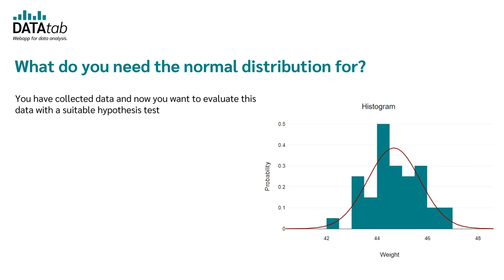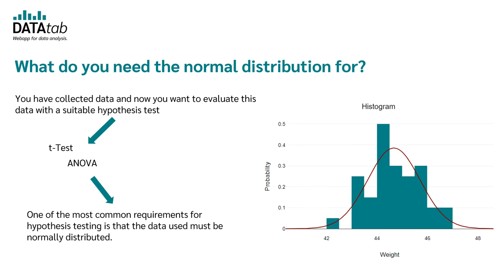Let's say you've collected data and you want to analyze this data with an appropriate hypothesis test, for example, a t-test or an analysis of variance. One of the most common requirements for hypothesis testing is that the data used must be normally distributed. Data are normally distributed if the frequency distribution of the data has this bell curve.